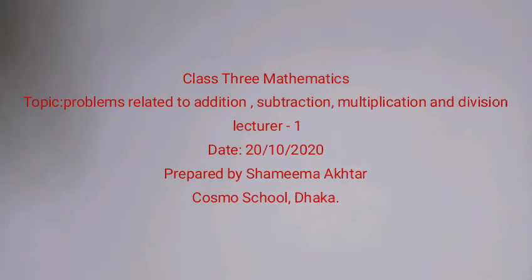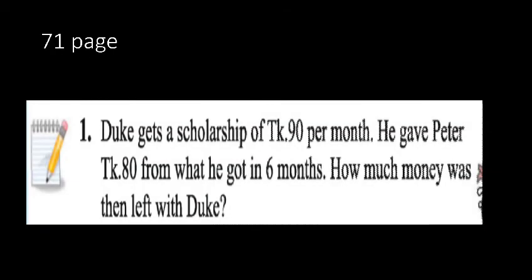Assalamualaikum, my dear students. I hope you are all okay. We are going to start a new chapter — chapter 71, page one, number two. Duke gets a scholarship of 90 taka per month. He gave Peter 80 taka from what he got in six months. How much money was then left with Duke?